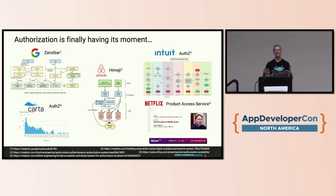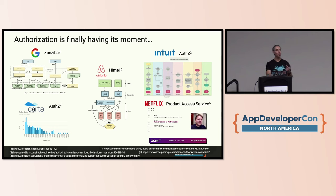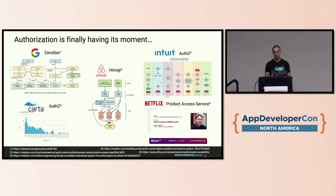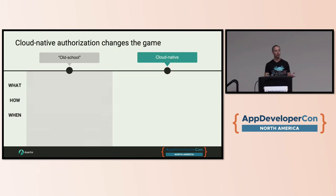We're finally seeing the moment for authorization, starting with all the tech companies. Google, back in 2020, wrote a paper called Zanzibar — a seminal paper, kind of like the MapReduce paper but for authorization. In it, they describe how they do authorization for all of the Google properties: Google Docs, Google Drive, Google Calendar, Cloud, and so on. A bunch of other companies followed suit — Airbnb, Intuit, Netflix, Uber, Reddit, Carta — they all wrote about their authorization systems. And we've now been able to glean some patterns in our attempt to democratize it for everybody else.